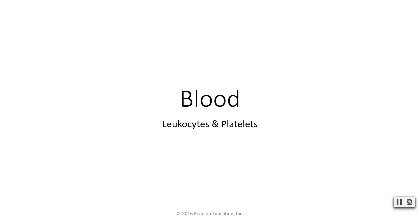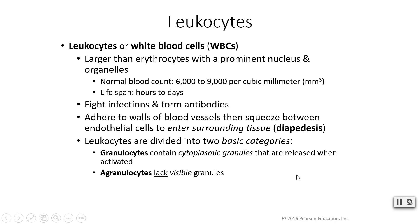In this lecture we will discuss leukocytes and platelets. Your leukocytes, or white blood cells, are larger than your red blood cells, your erythrocytes, and they have very prominent nuclei with organelles, so they are complete cells unlike your red blood cells. Normally you have approximately six thousand to nine thousand white blood cells per cubic millimeter — drastically lower than your red blood cells. In one cubic millimeter you could have between four and six million red blood cells.